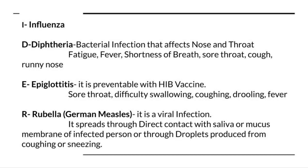I stands for influenza. D stands for diphtheria, an emergency condition seen in children where there will be a whitish-colored patch over the pharynx and the child will have airway obstruction. Diphtheria affects the nose and throat — the child will have runny nose, sore throat, difficulty breathing, and coughing. E stands for epiglottitis, an infection and inflammation of the epiglottis. It is also an emergency condition where the child will have drooling, coughing, difficulty swallowing, and respiratory distress. It is preventable with the Hib vaccine.